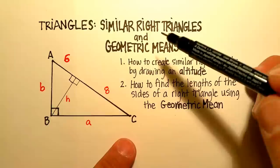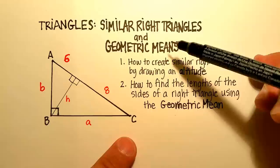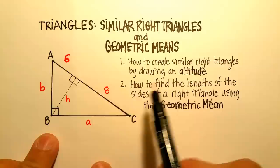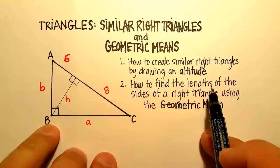In this video we're going to examine a concept called similar right triangles and the geometric means. We're going to answer two questions: how do we create similar right triangles by drawing something called an altitude, and how do we find the lengths of the sides of a right triangle using the concept of geometric mean?